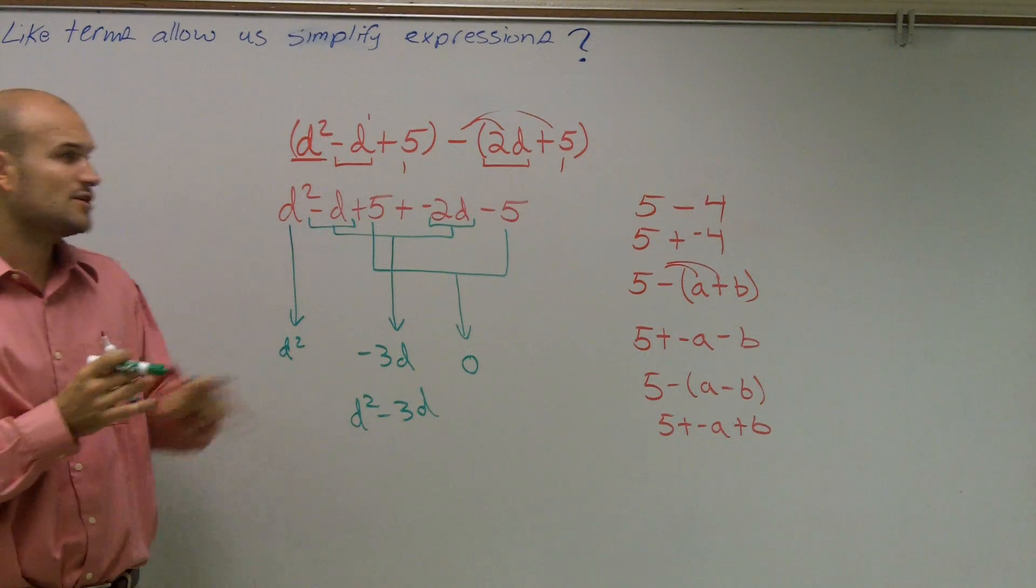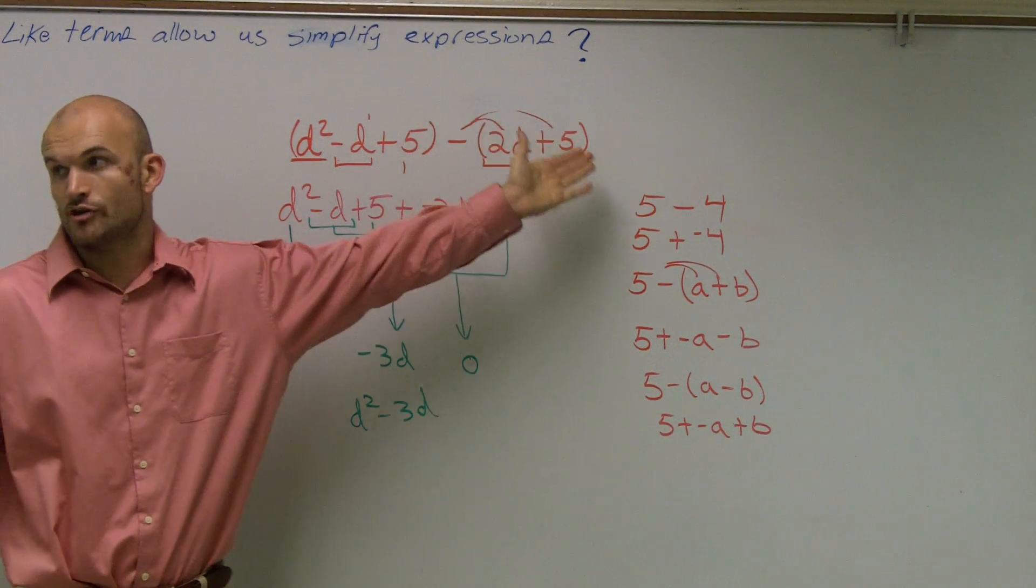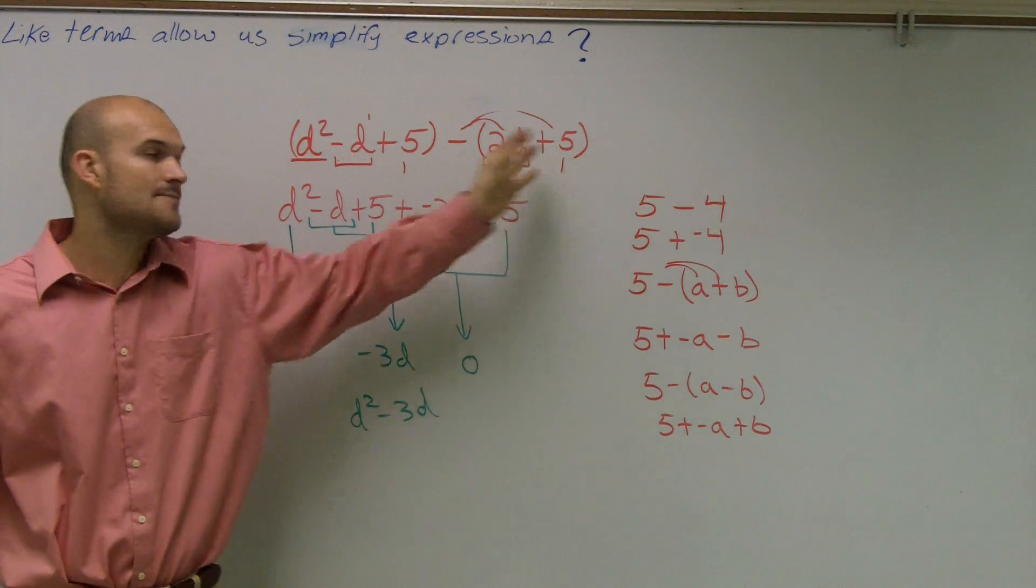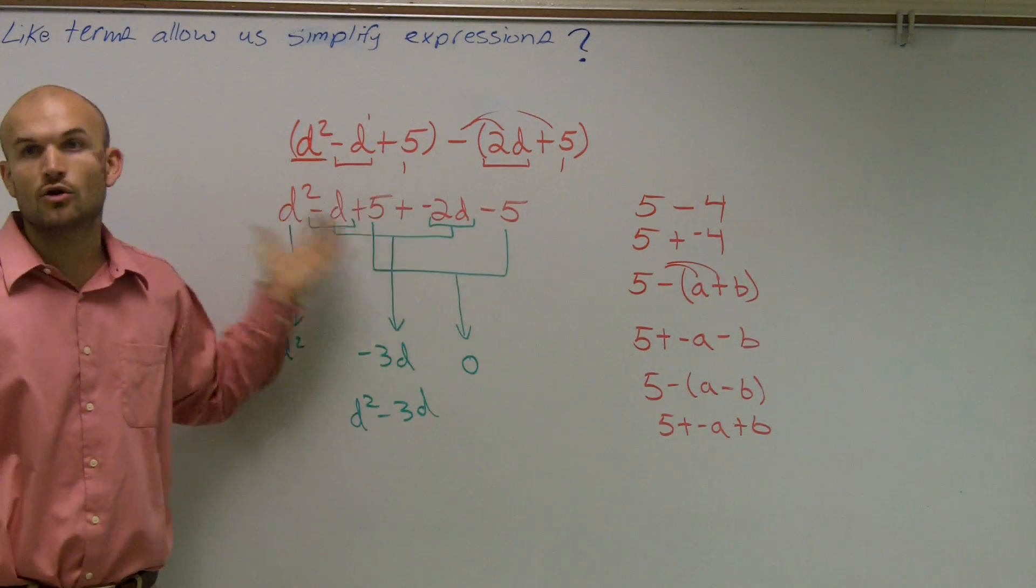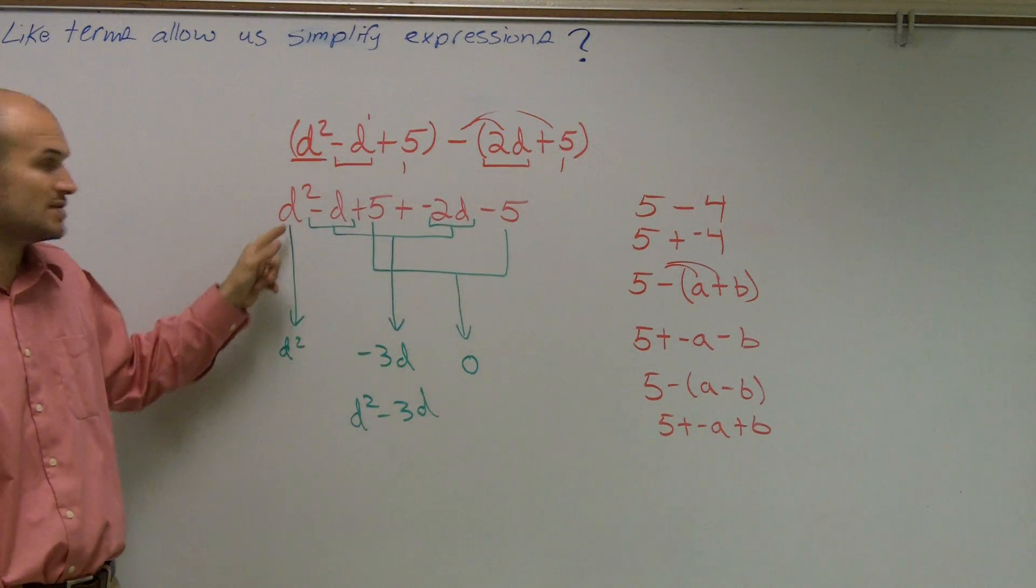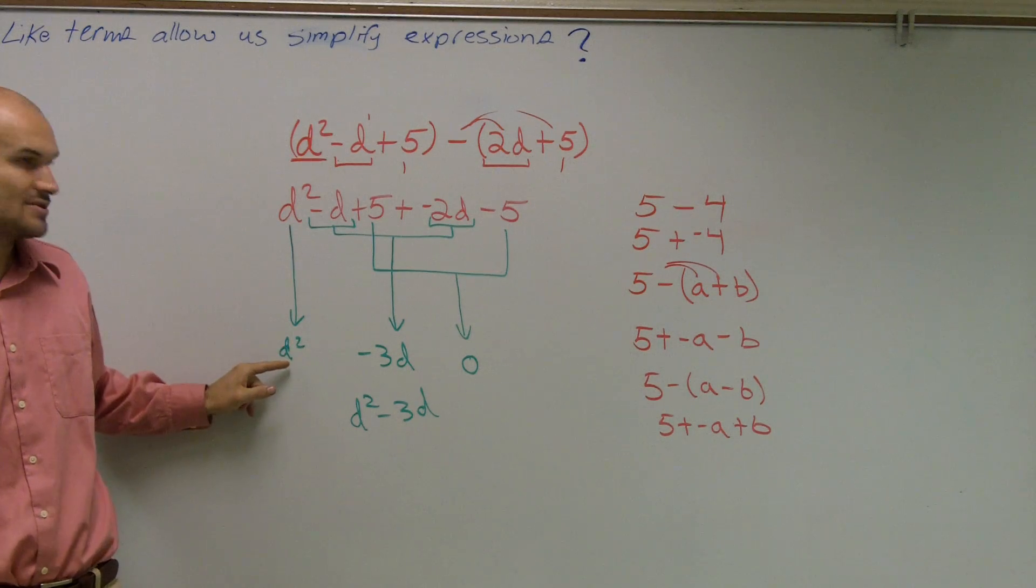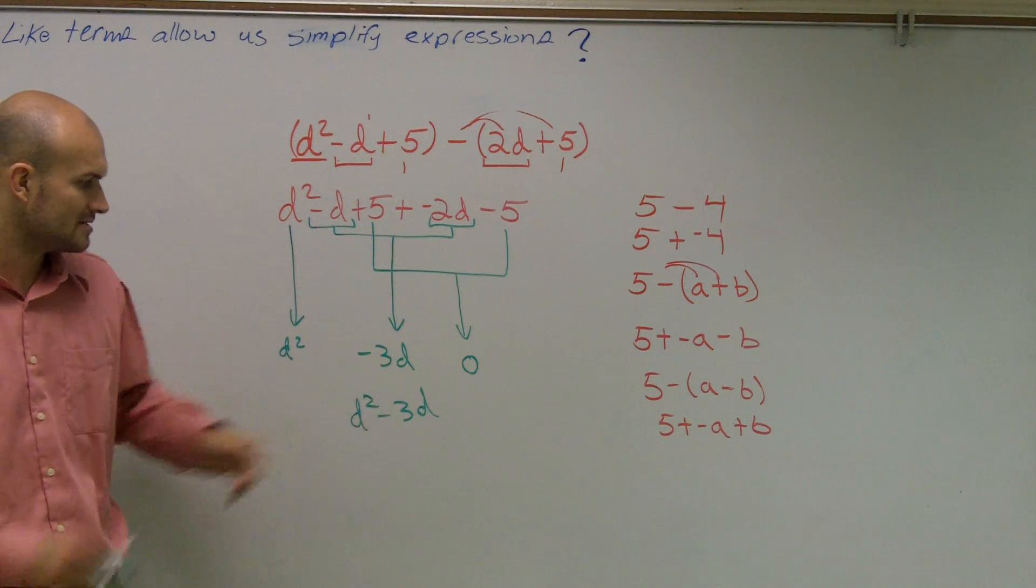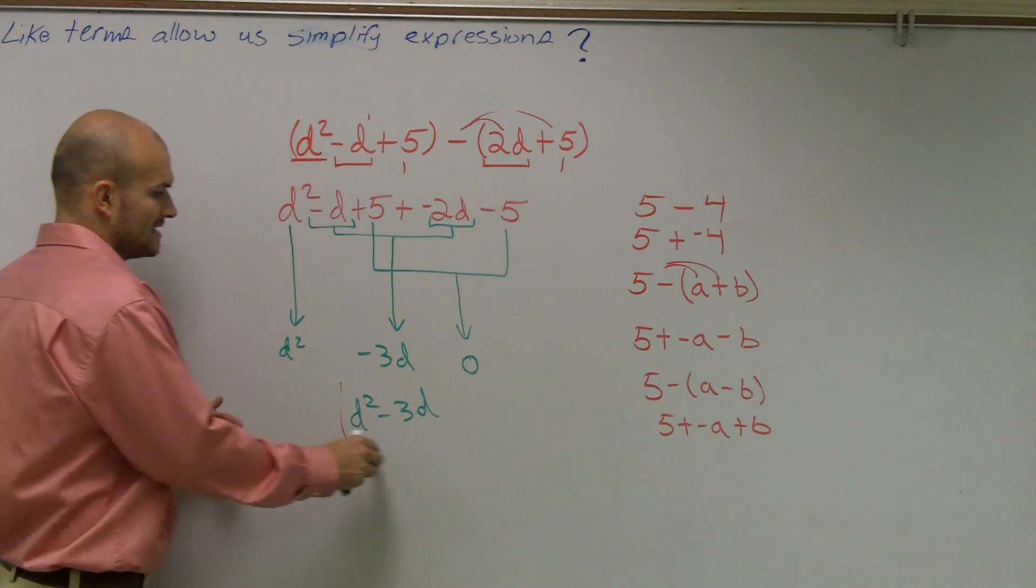Did everybody see how I did that? Make sure if you have subtraction, you distribute that negative sign. Then just make sure you combine your like terms. If there's nothing to combine, just bring it down. Combine your like terms, and then you'll get your finalized answer.